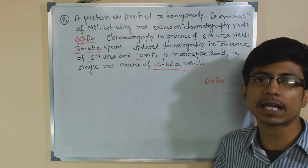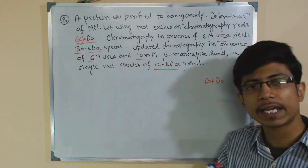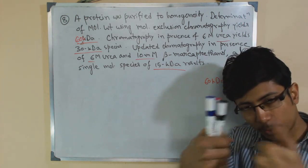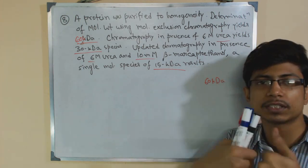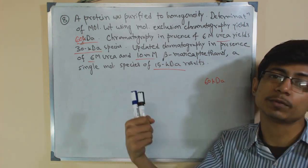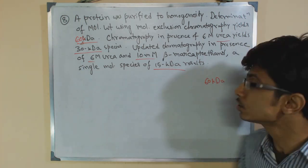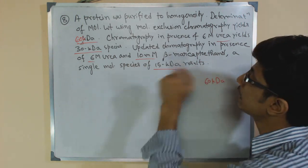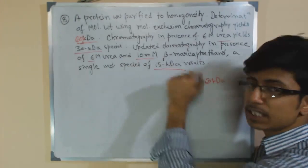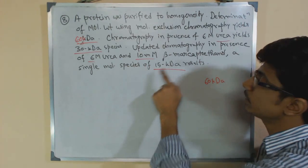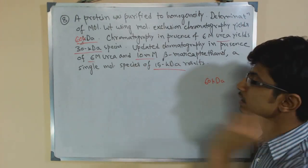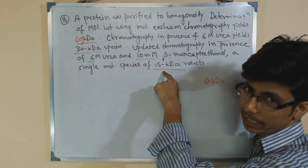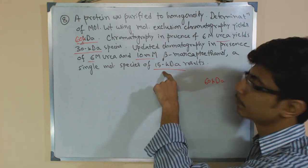As beta-mercaptoethanol reduces the disulfide bond, the sulfide bridge is broken and the protein's side chains are separated. So ultimately it separates them, and after this type of chromatography, we achieve one single species of 15 KDA protein.